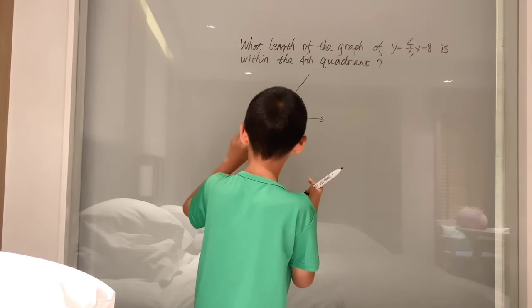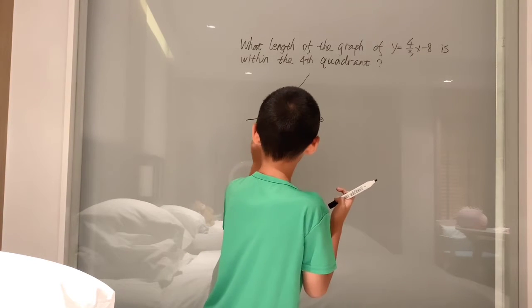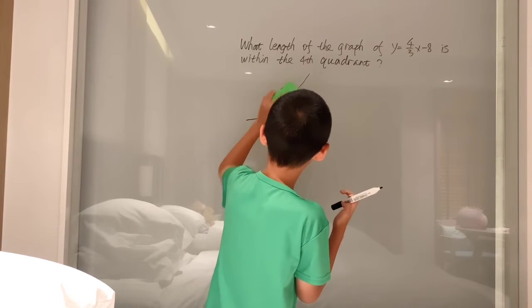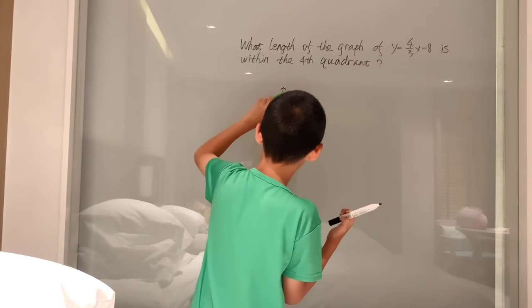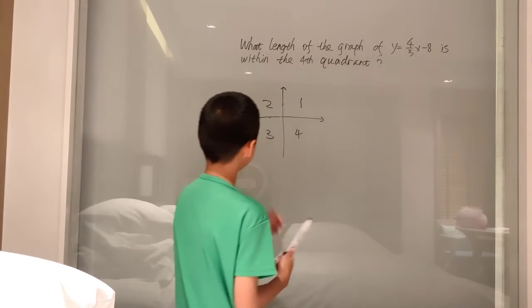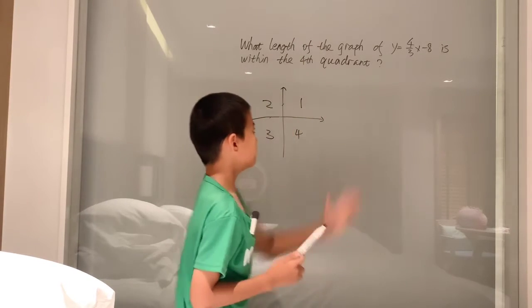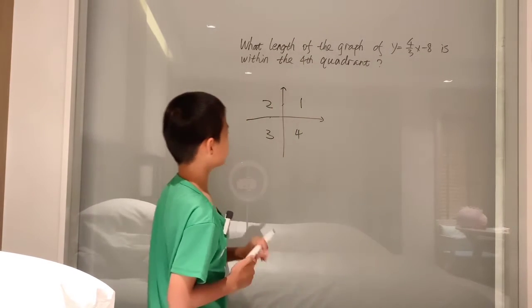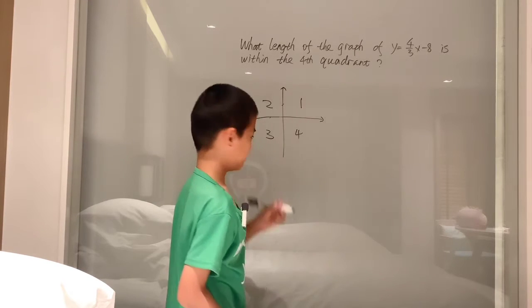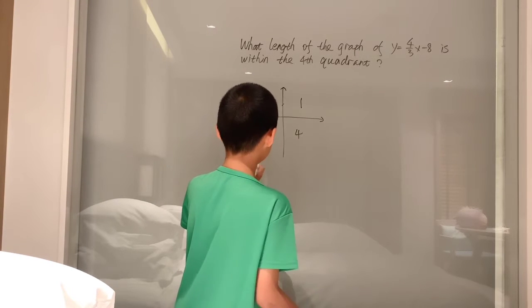So, erase that. So, again, nothing too complicated, just something new that you have to work with. So, the length of the graph of this line, and it goes through the fourth quadrant. So, that's a positive line, so that kind of looks like this.